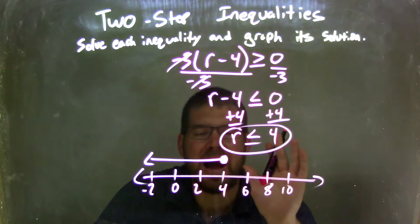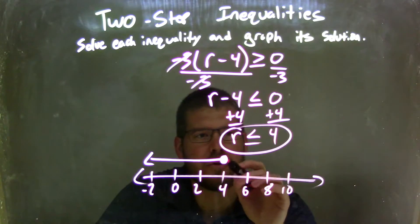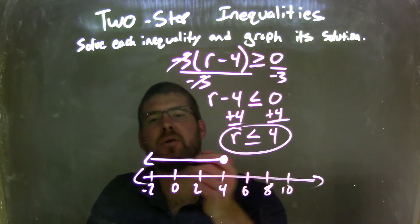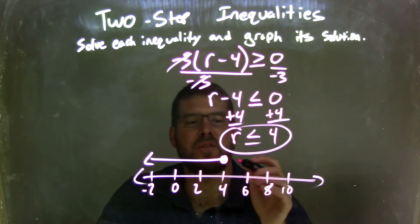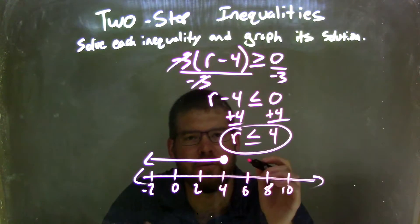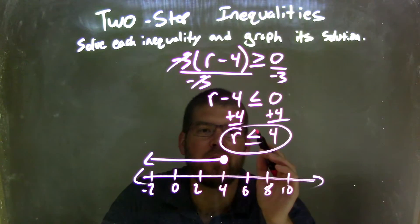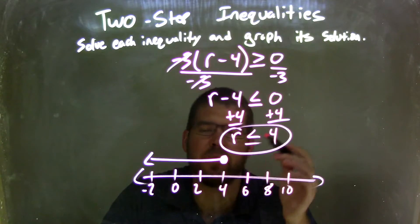And then from there, I have to graph it. So it's a closed circle at 4 because it's equal to. My arrow goes to the left because it's less than. And so this graph here represents all possible values in our final answer for r where r is less than or equal to 4.